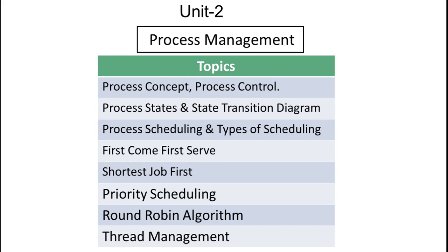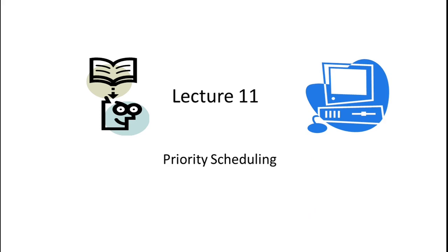Till today we have discussed two techniques in terms of process scheduling: first come first serve and shortest job first. Today's session is about priority scheduling. Priority scheduling has two types: non-preemptive and preemptive. Our earlier techniques, FCFS and SJF, worked only in non-preemptive mode, but priority scheduling works in both non-preemptive and preemptive modes.